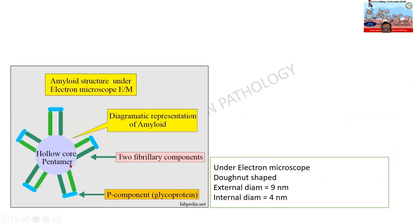Another way of describing it: all the fibrils are connected by the P-component and sets of these are arranged around a pentamer — a five-sided structure. This forms the center, measuring about 4 nanometers, and the entire structure measures about 9 to 10 nanometers. So under the electron microscope it has a hollow shape with an external diameter of 9 nanometers and internal diameter of 4 nanometers.